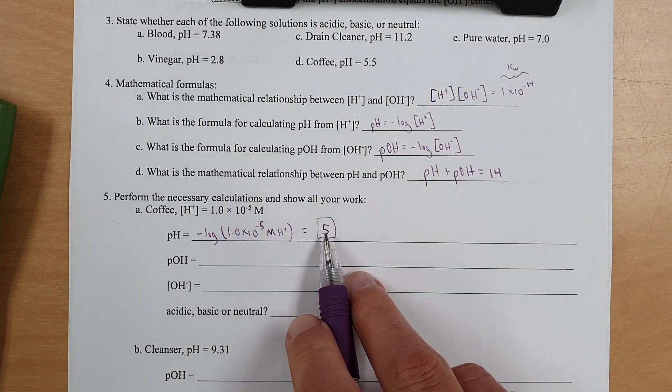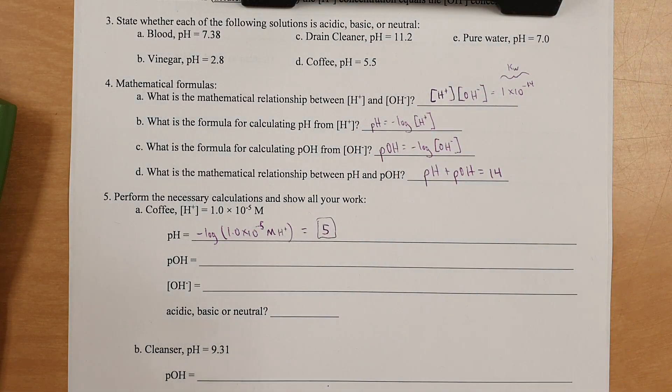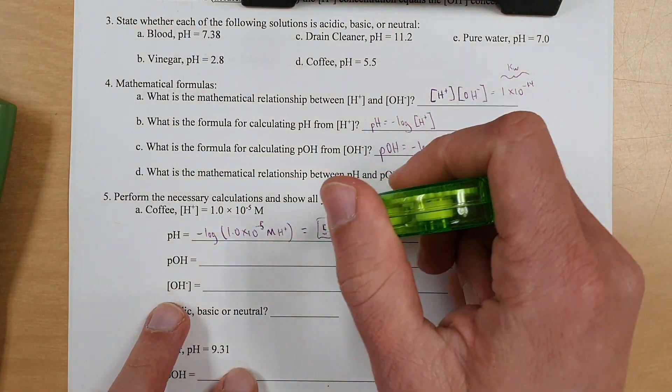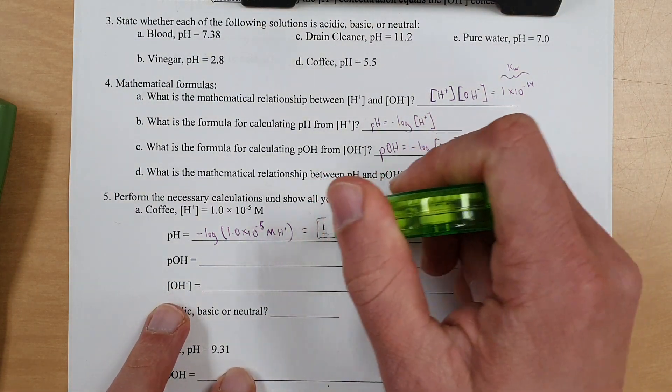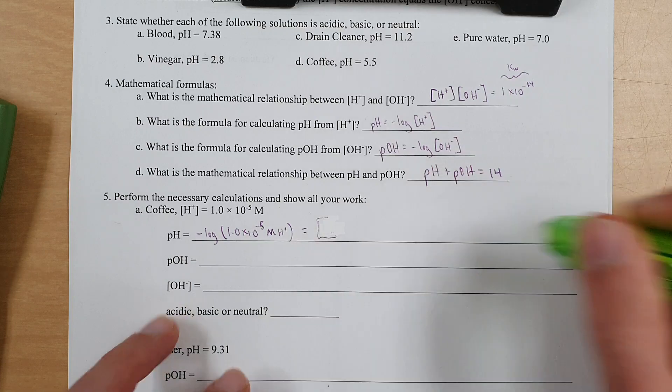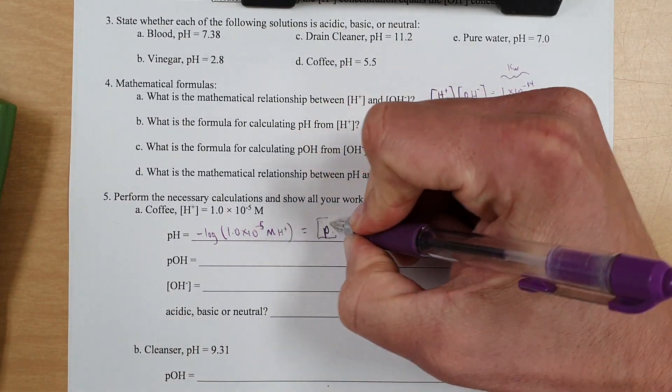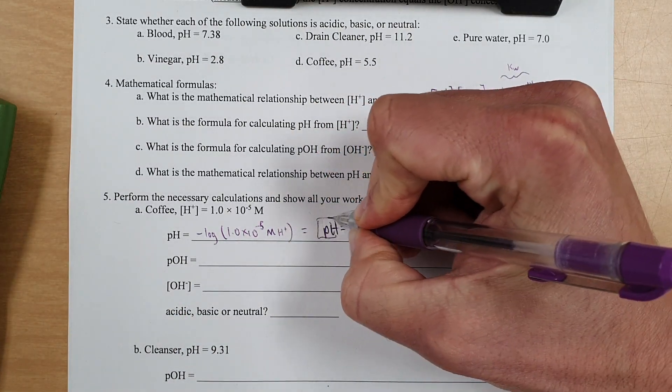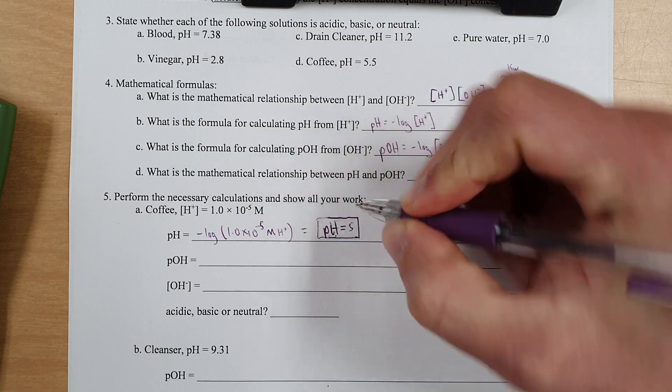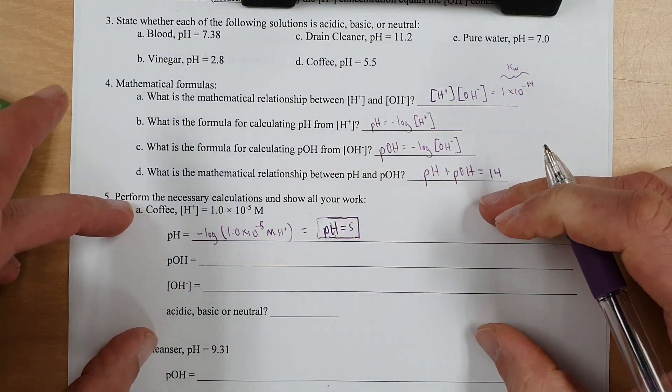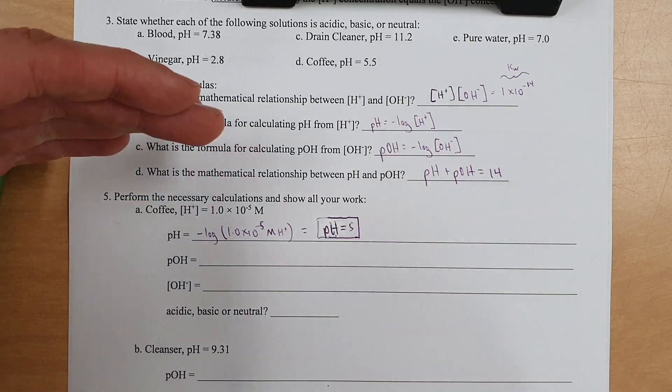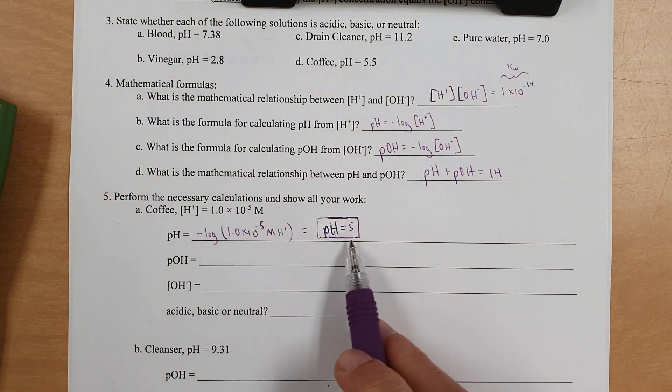So pH equals 5. Notice that there is no units. Now, for clarity, what I should do is something like this, pH equals 5, because when you're taking a test, you probably won't see a format like this. It'll just say solve for this and give you a blank without separating it out. And so you're going to want to make it really clear what thing is what.